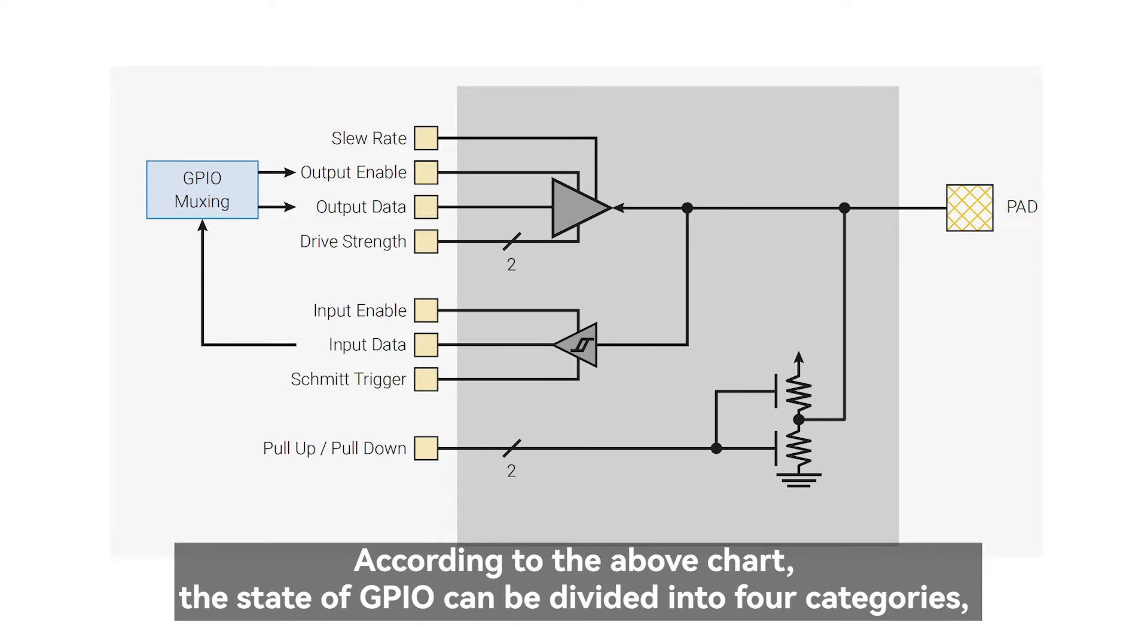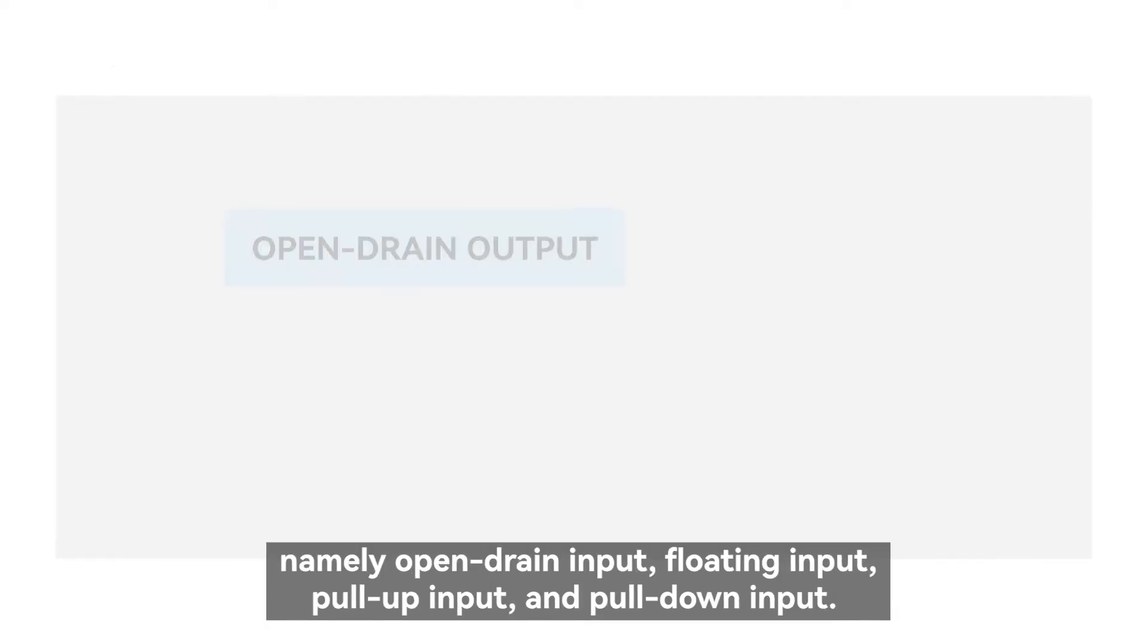According to the above chart, the state of GPIO can be divided into four categories, namely open drain output, floating input, pull-up input, and pull-down input.